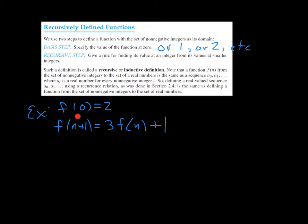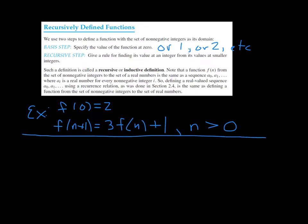Let's jump right into an example. The basis step defines f(0) = 2. The recursive step gives values for the function in terms of lower input: f(n+1) = 3·f(n) + 1, and this definition is valid for n greater than 0. What we usually want to do when looking at these functions is compute the first couple of values to see how this works.